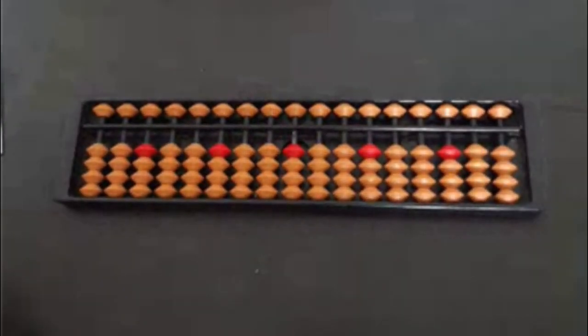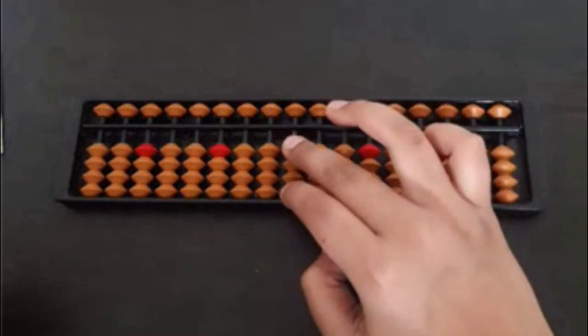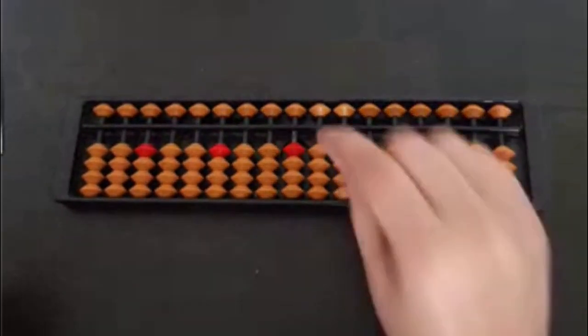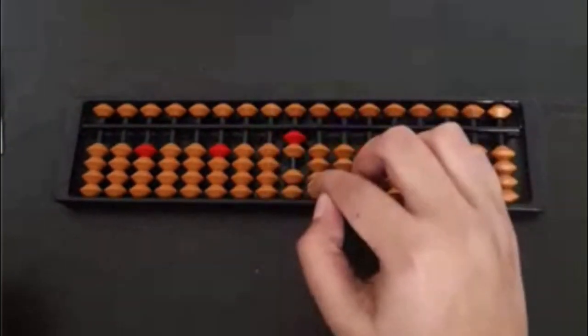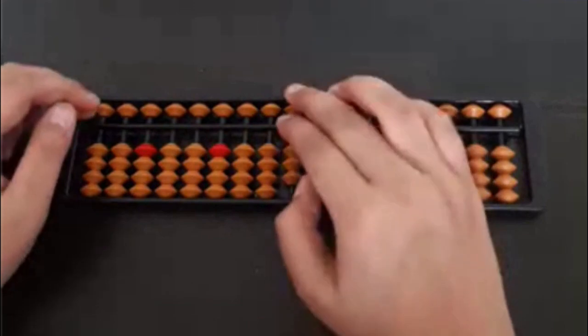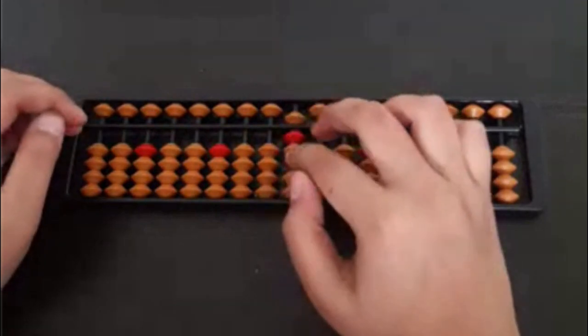The first thing is we will be using this line for the calculation of ones. So 1, 2, sorry, 2, 3, 4, 5, 6, 7, 8, 9. So maximum we can put 9 digits.